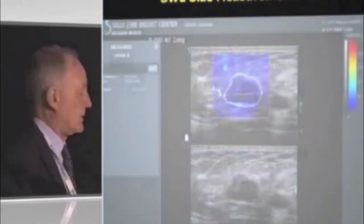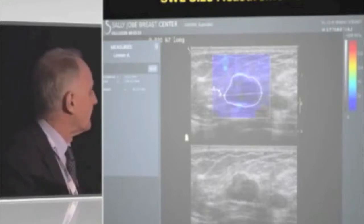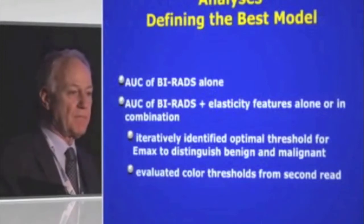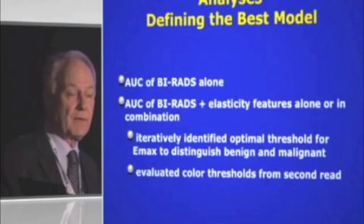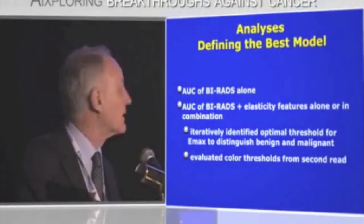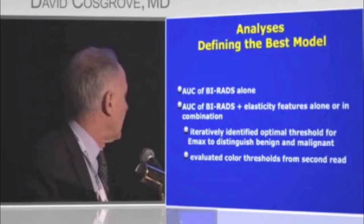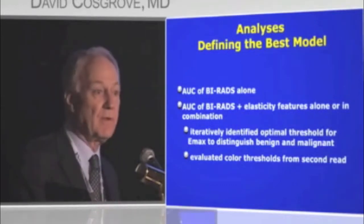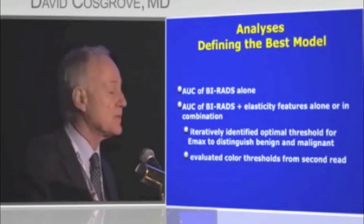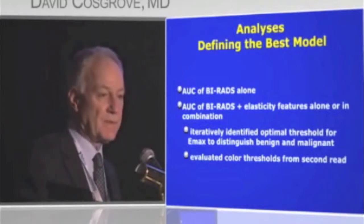We measured lesion size—in cases with no increased stiffness, we traced around the B-mode outline on the underlying display. Then we built a model to identify the most discriminating combination of B-mode and shear wave features by evaluating areas under the ROC curves and identifying the optimum threshold cutoff. We also analyzed color thresholds from the blinded second read.